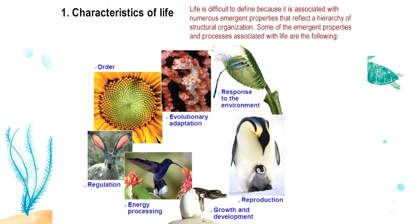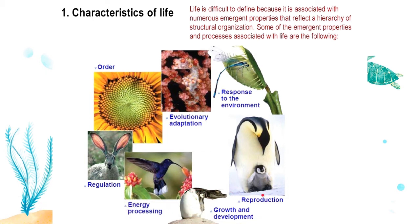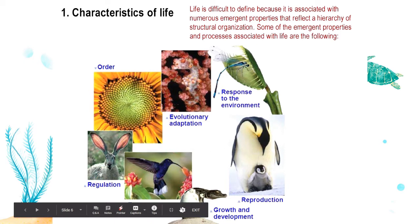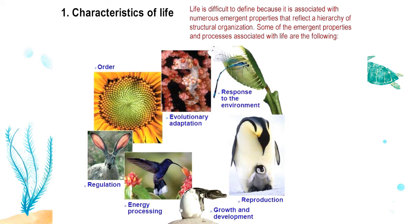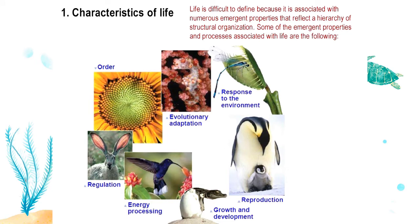Scientists and biologists have come up with criteria that differentiate living things from non-living things. These include having levels of organization, the ability to adapt to their environment and evolve over generations, the ability to respond to their environment, the ability to reproduce, the ability to grow and develop, and involvement in energy processing — whether harnessing energy from the sun like plants and algae, or processing food to harvest energy like animals do.